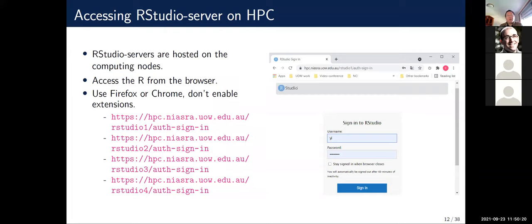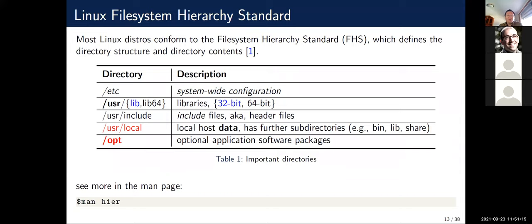Since most of our users are RStudio users, the HPC cluster provides RStudio Server on the compute nodes, accessible from your browser. One tip: don't disable browser extensions — I personally have Tampermonkey on Chrome and it sometimes causes weird mouse issues when accessing RStudio Server. Here is the list of URLs to access RStudio Server — type the URL, enter your username and password, and you can sign into RStudio Server on the compute node. Because RStudio Server uses HTTPS you don't need to use VPN to access it, although I would recommend using VPN.